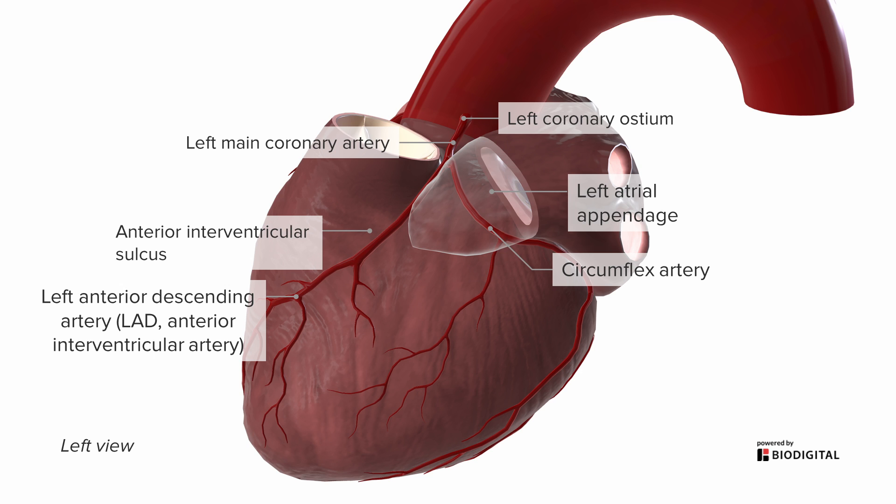Both of these arteries are going to give off some branches along the way. Some of the important ones are the diagonal branch or branches that come off of the LAD as they cover the surface of the left ventricle, and they're quite important clinically because they're often involved by atherosclerosis. And the left ventricle, well that's the one that's pumping all the blood out to the body, so it's a really important ventricle in that sense. The circumflex is giving off an artery called the left or obtuse marginal artery, which you might imagine is sort of a mirror image of the right or acute marginal artery.